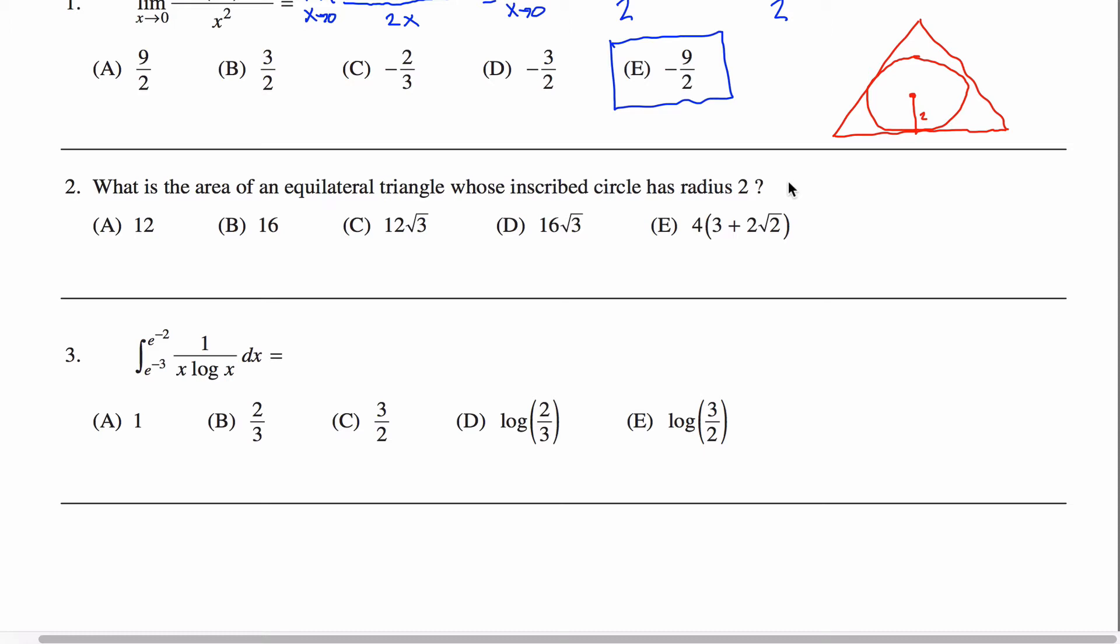There's lots of different ways you can do a problem like this. I think the easiest way is to divide your triangle up into shapes whose area you know. So if I draw a couple more radii in here, those distances are two as well. And what you'll see is I've divided my triangle, equilateral triangle, up into these three kites here.